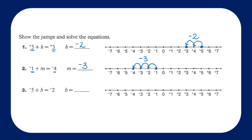Question number 5: we're going to start at the integer negative 5. We want to land at the integer negative 2. We will have to make a forward leap of 1, 2, 3 leaps in the positive direction to the right. We can record this as plus 3, positive 3, or just 3. Negative 5 plus 3 equals negative 2.